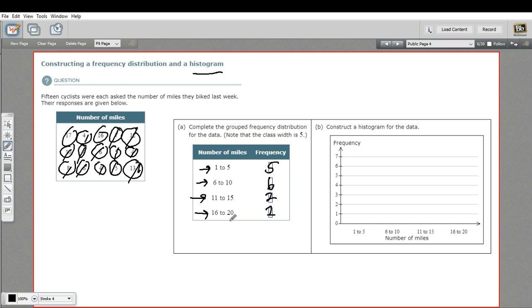So when we make our graph, what we're doing is we're making a graph of the frequency, how often something happens in a set of data, not making a graph based on the data in terms of the number of miles itself.